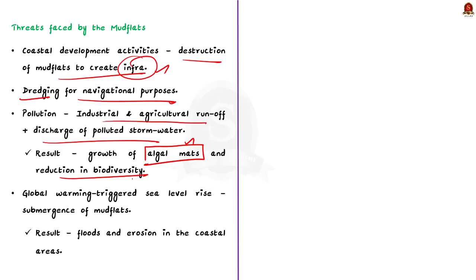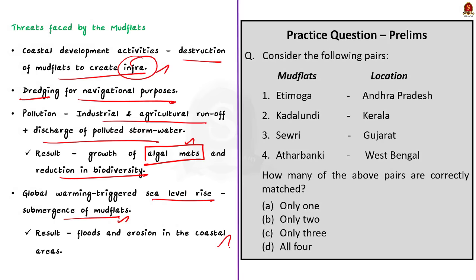The final threat is due to sea level rise. Global warming-triggered sea level rise is submerging significant sections of mud flats all around the world, leading to loss of tidal flats, which in turn causes floods and erosion in coastal areas. In this discussion we saw what mud flats are, their significance, and the threats they face. Now let us take up the next news article.